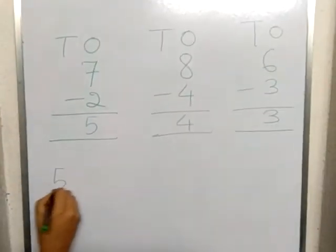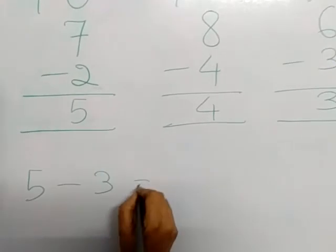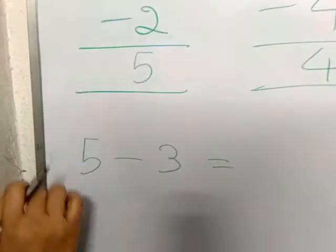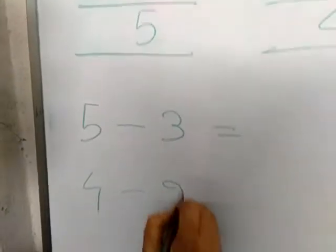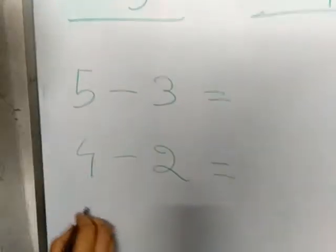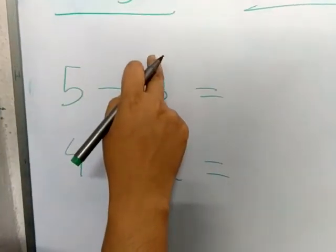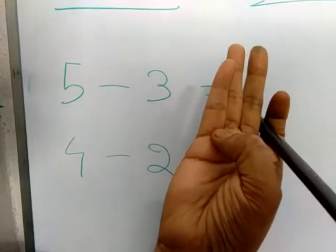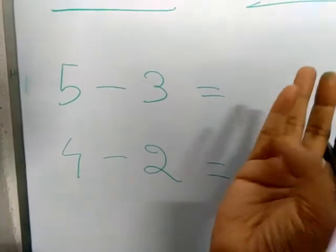5 minus 3. 4 minus 2. 5 is the big number, 3 is the small number. Start counting from 3. 4, 5. Count 1, 2.